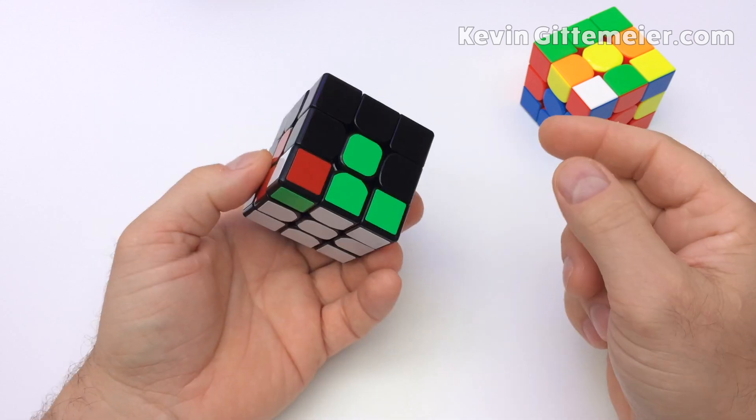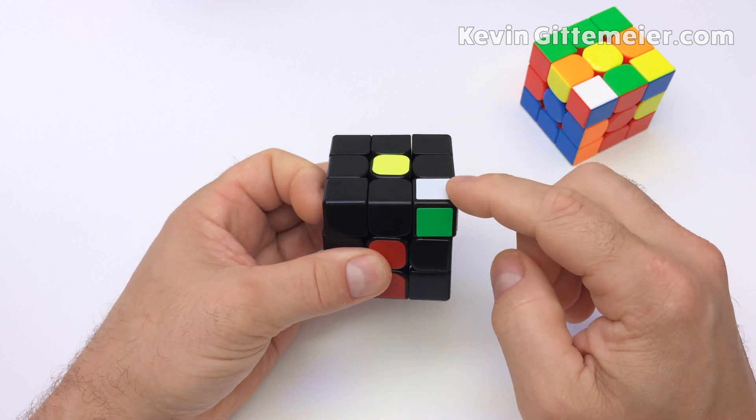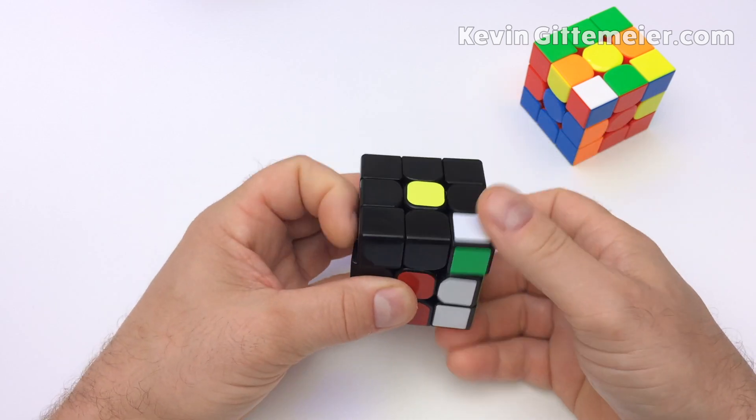If it's in the correct spot, just oriented incorrectly, kick it out. Again, kick it out any way you like, but try not to kick it out with the white sticker facing up. That'll save you a few steps.